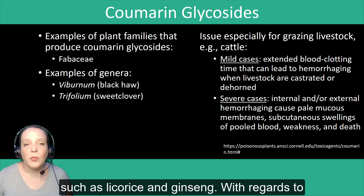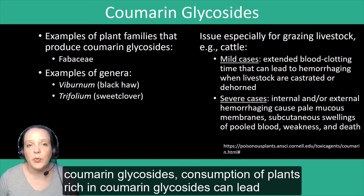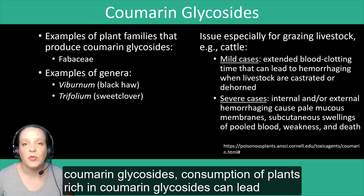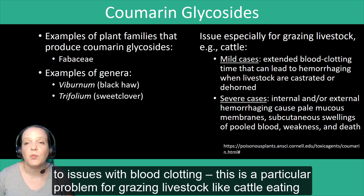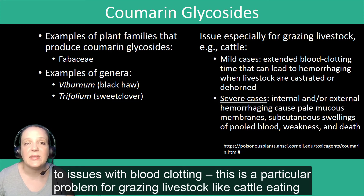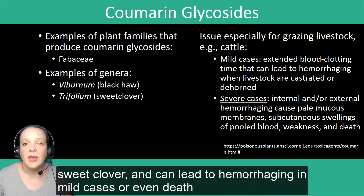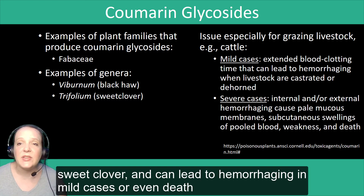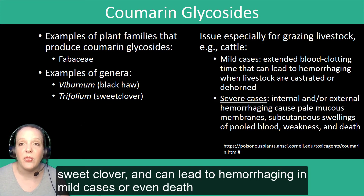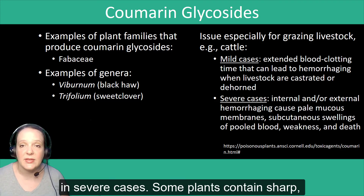With regards to coumarin glycosides, consumption of plants rich in these compounds can actually lead to issues with blood clotting. This is a particular problem for grazing livestock, like cattle eating sweet clover, and can lead to hemorrhaging in mild cases or even death in severe cases.